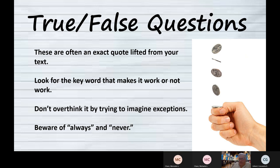If I'm writing a true/false question, these ought to be easy, but sometimes students make them difficult. The easiest way to write a true/false question is to take an exact quote from the book and either put it in just as it is — and that would be true — or put it in and change a key word, and that would make it false.